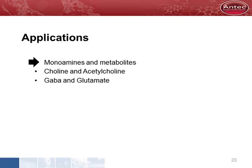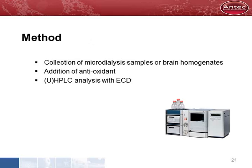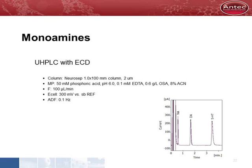The first application we would like to show is the analysis of monoamines and metabolites. Microdialysis samples are collected in vials, antioxidant is added, and samples are usually stored in a freezer. Analysis is done using HPLC with electrochemical detection. This is an example chromatogram of standards. Detection limit is below 100 picomole per liter, less than 0.5 femtomole.